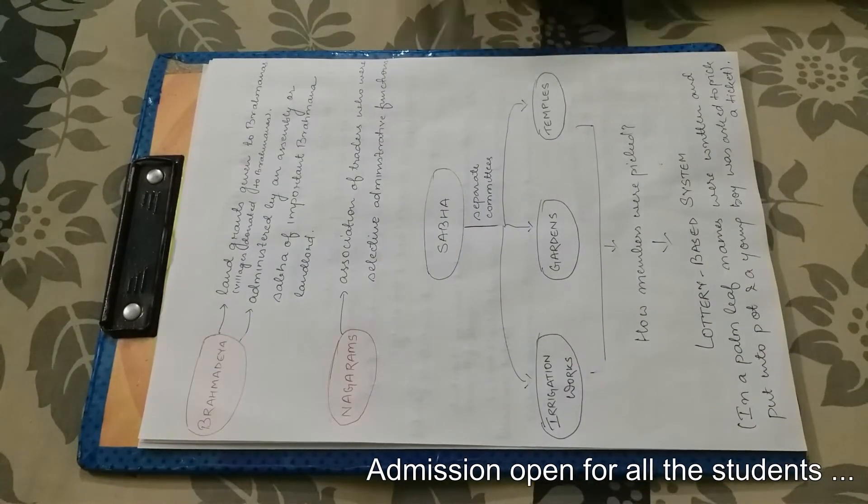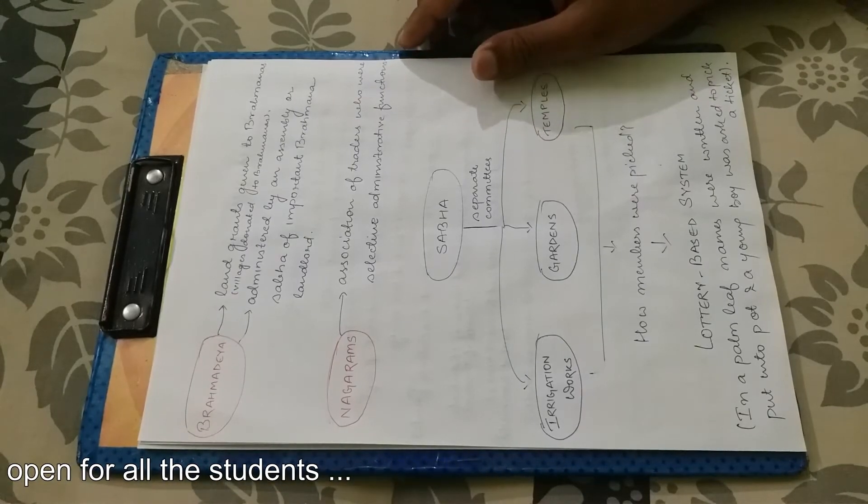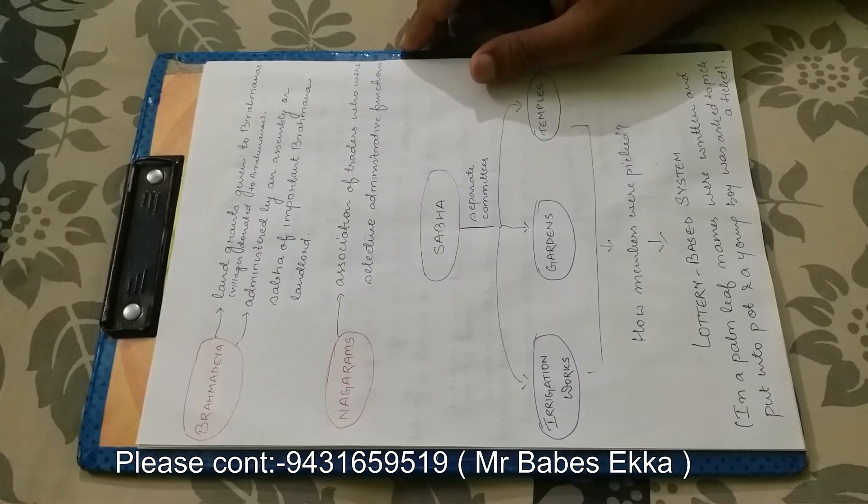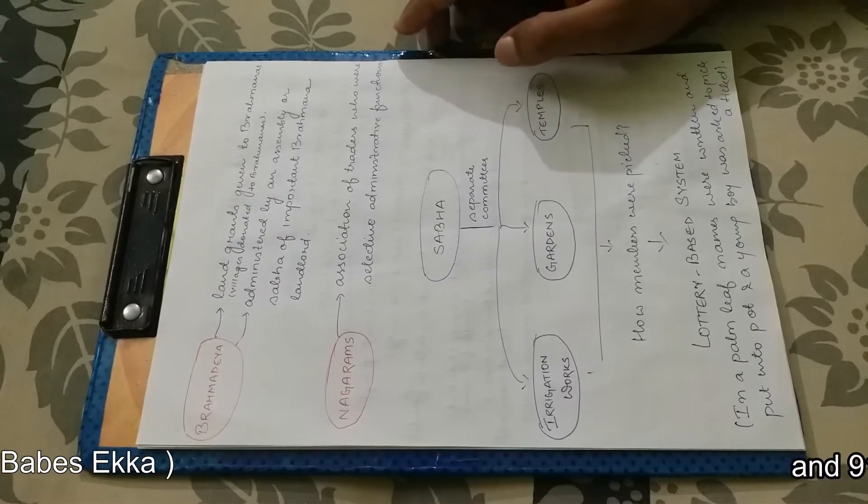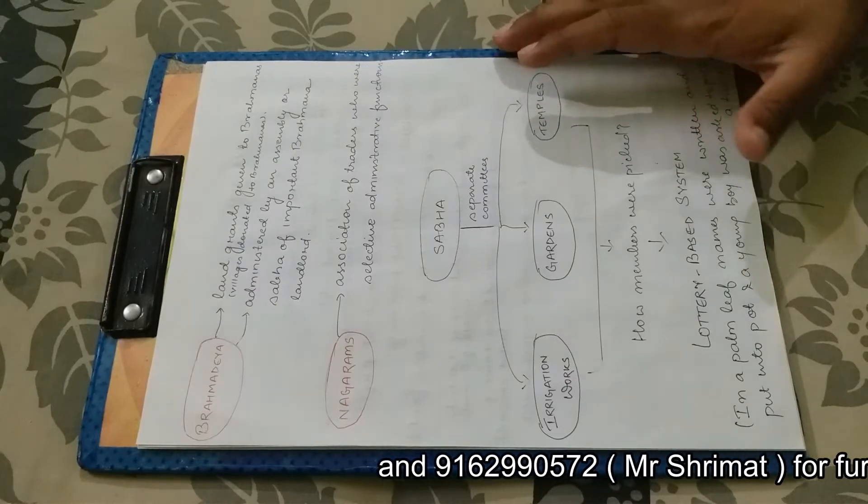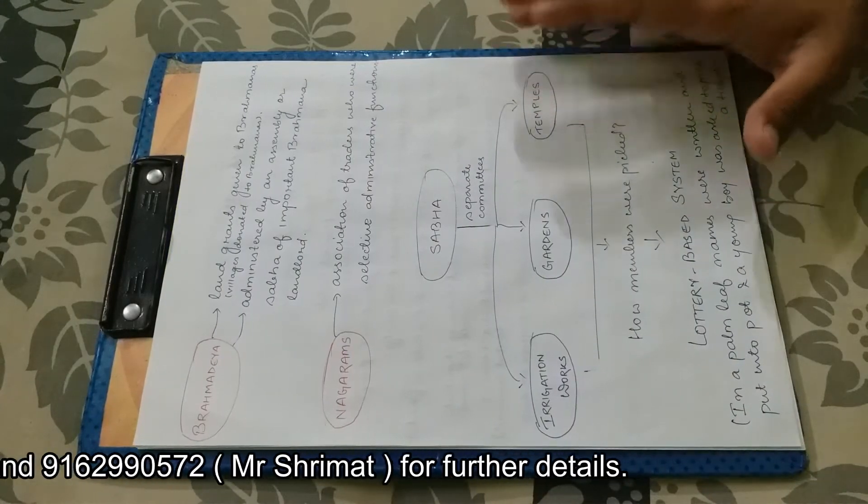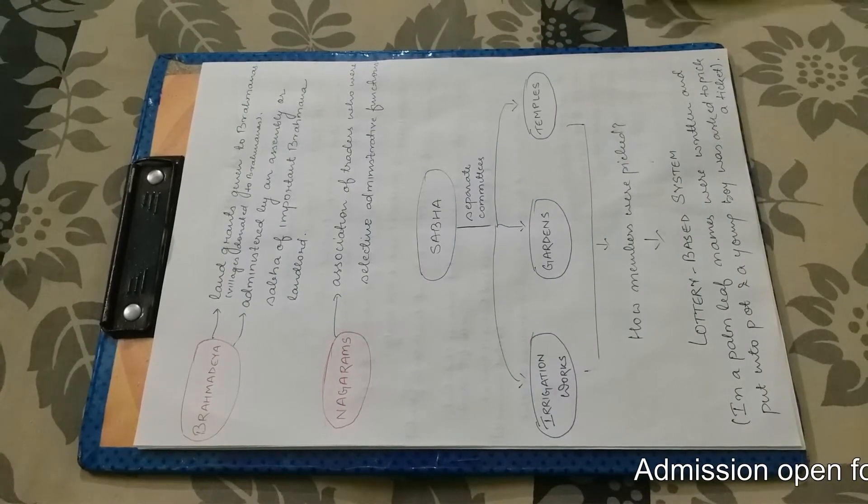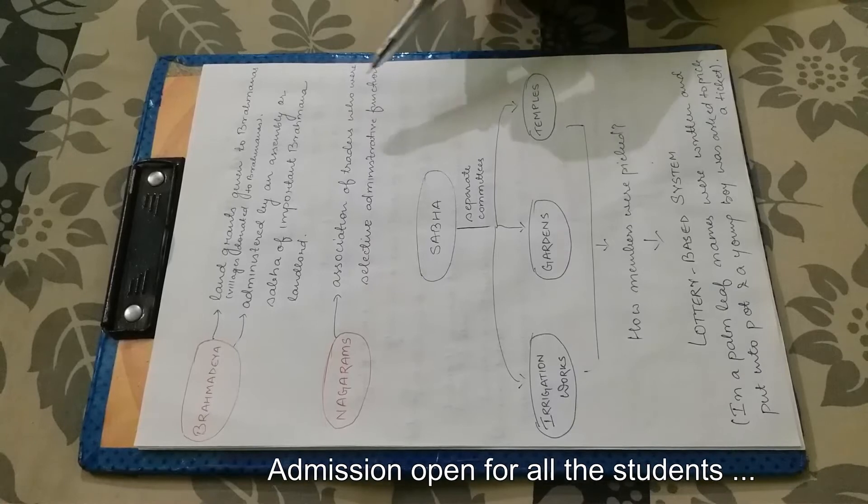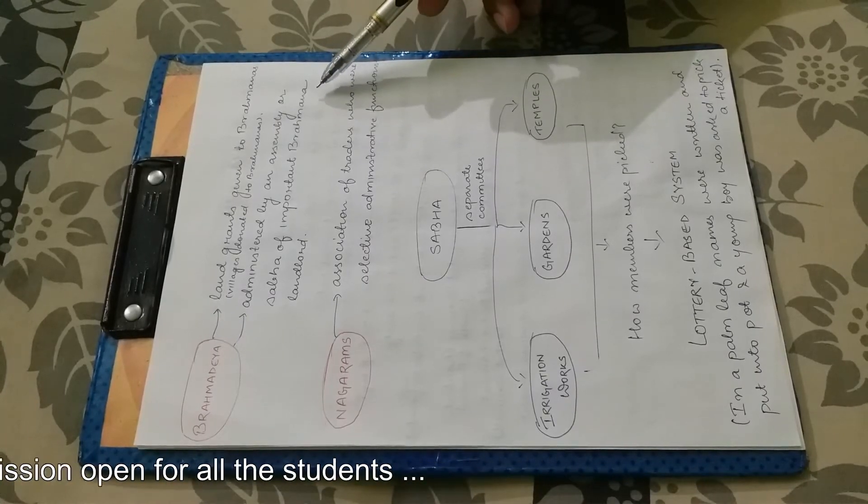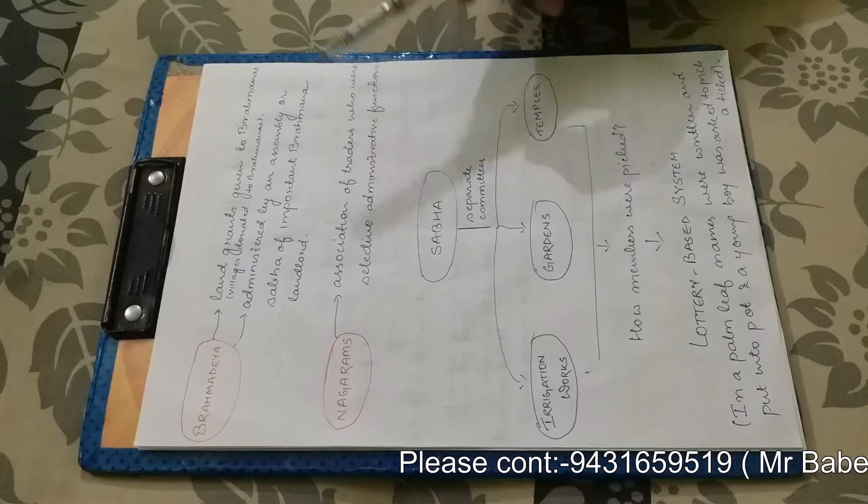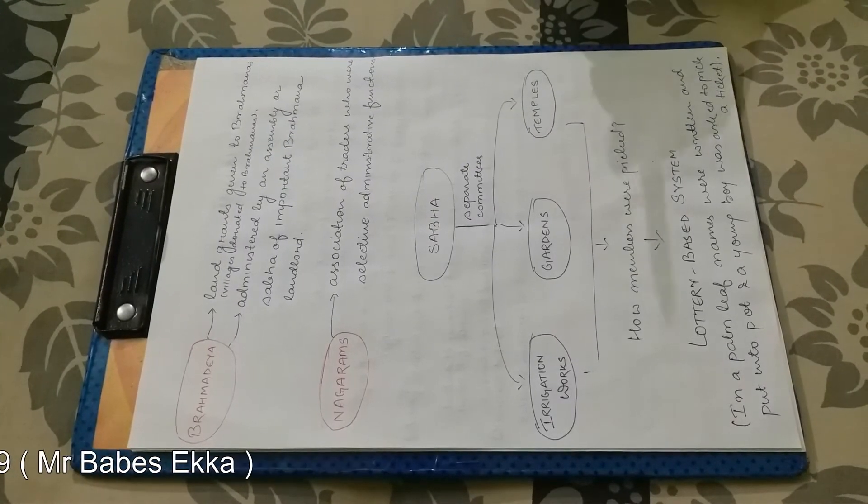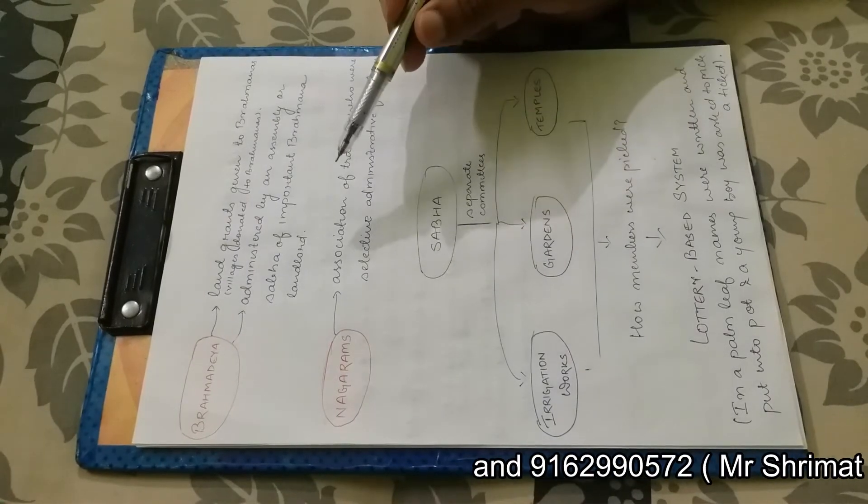Now, what is the meaning of Brahmadeya? Brahmadeya means land grants given to Brahmans. And the village donated to Brahmans. Meaning, the village or the kings donated to Brahmans. So, we call them Brahmadeya. They were administered by an assembly or sabha of important Brahmans landlord. Who administered them? Important Brahmans landlord.